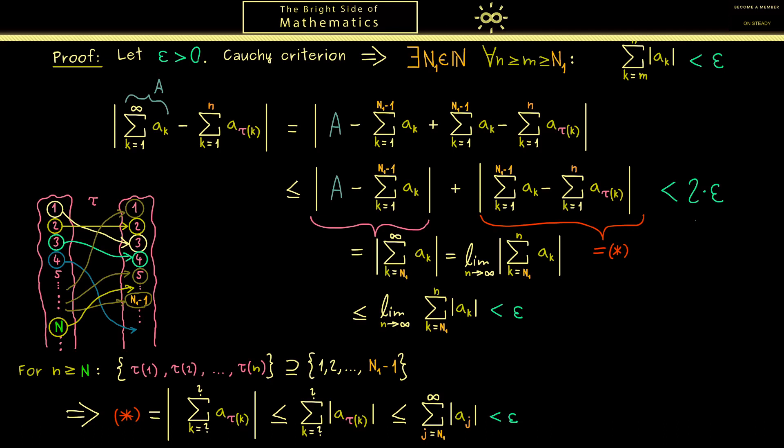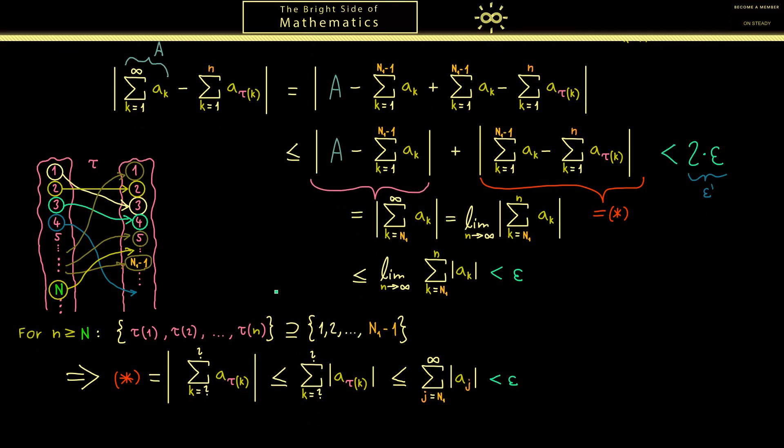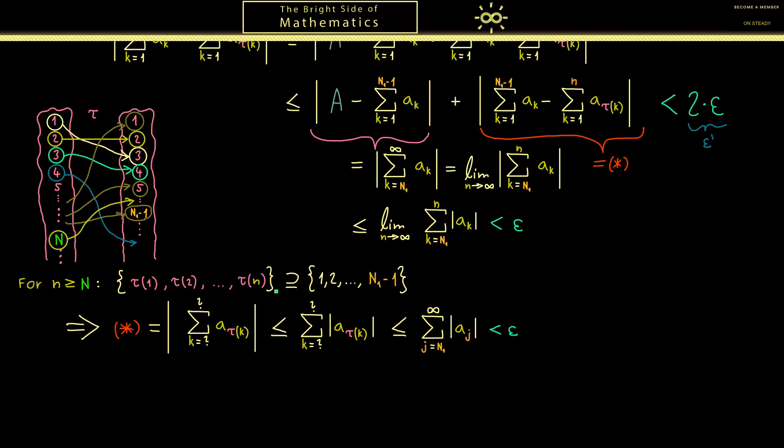Because now we have both terms here less than epsilon. Hence the whole sum is less than 2 epsilon. And as usual, we can call this 2 times epsilon epsilon prime. Therefore, in summary, this whole calculation shows the convergence property. This means that for all epsilon prime greater than 0, we find a capital N such that for all indices afterwards, this difference is less than epsilon prime. So here we have the limit for this sequence of partial sums, and this is what we wanted to show. The reordering has the same limit as the series before. This closes our proof.